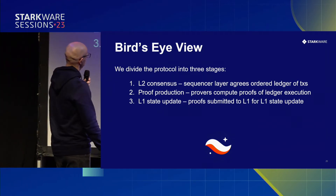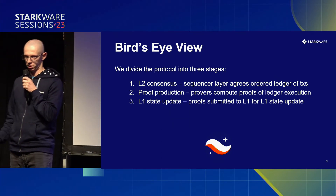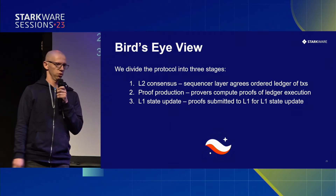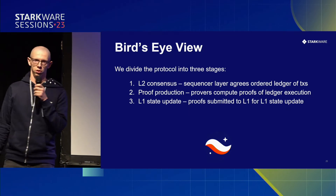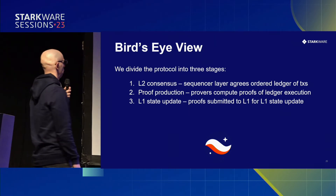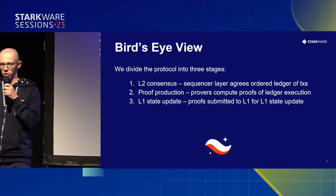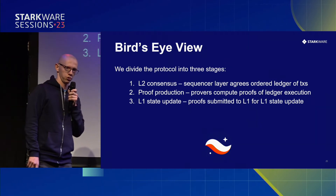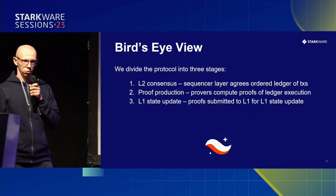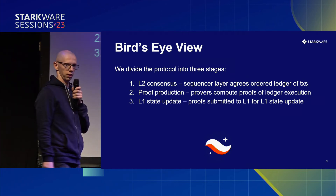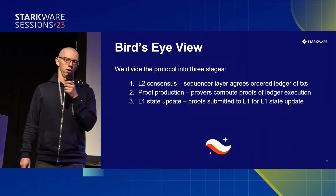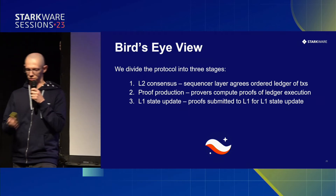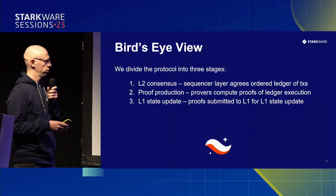The bird's-eye view: we can think about the entire protocol in three big steps. First is the stuff that goes on off-chain — the sequencer layer, where a bunch of nodes talk between them, hopefully agree, and there is no evidence of this on chain. Second is proof production: you have all these transactions, people execute them but they need to be proven, because that's how we scale by averting computation away from Ethereum. Third is the L1 state update protocol, where people take results of computation and paste them to Ethereum.